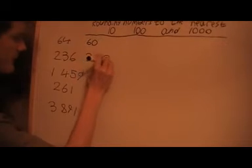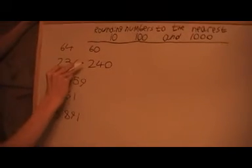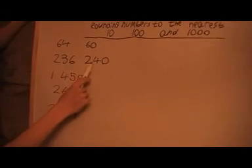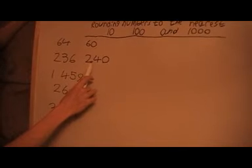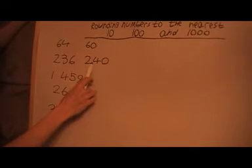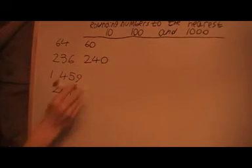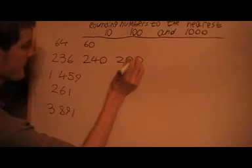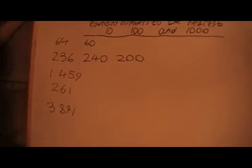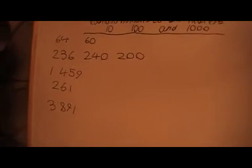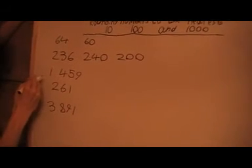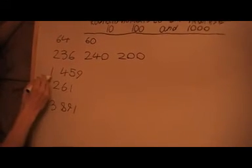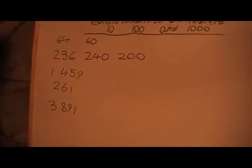Now to round 240 to the nearest hundred, look at the tens digit, which is four. Four is less than five, so round that down to 200.